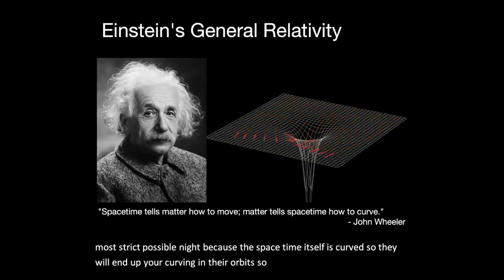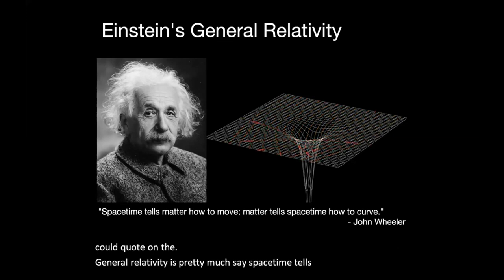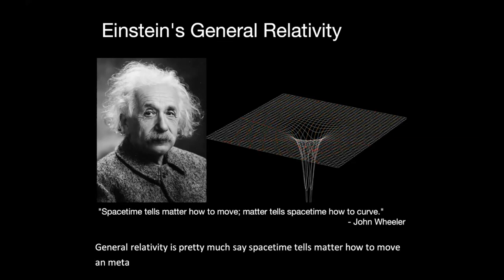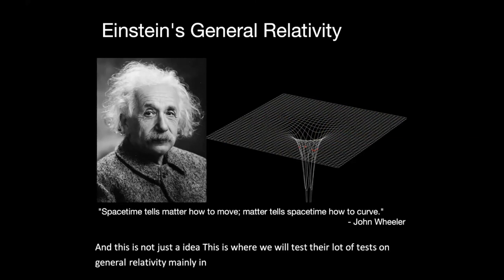So John Wheeler gave a very good quote on this. General relativity pretty much says space-time tells matter how to move, and matter tells space-time how to curve. And this is not just an idea. This is very well-tested. There are a lot of tests on general relativity, mainly in the solar system. However, we don't really know if the theory is still valid when we go to very dense objects.